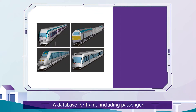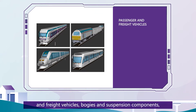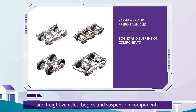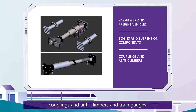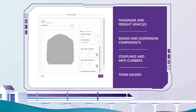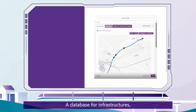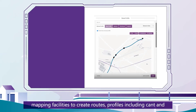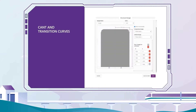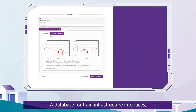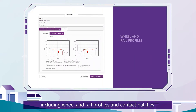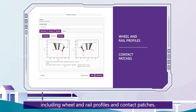Digital Trains includes a database for trains, including passenger and freight vehicles, bogies and suspension components, couplings and anti-climbers, and train gauges. There is also a database for infrastructure, with mapping facilities to create route profiles including cant and transition curves, structural gauges, and fixed or sliding buffer stops. Additionally, there is a database for train-infrastructure interfaces, including wheel and rail profiles and contact patches.